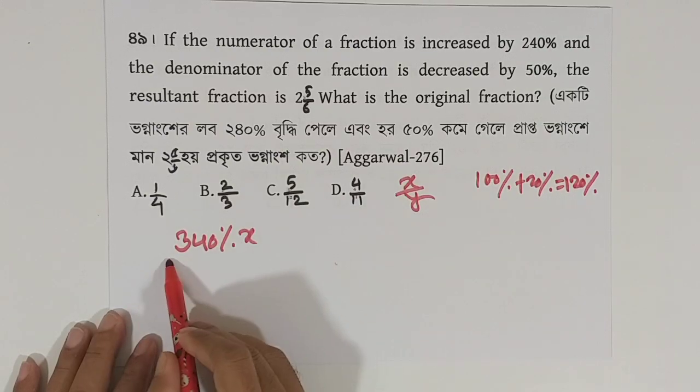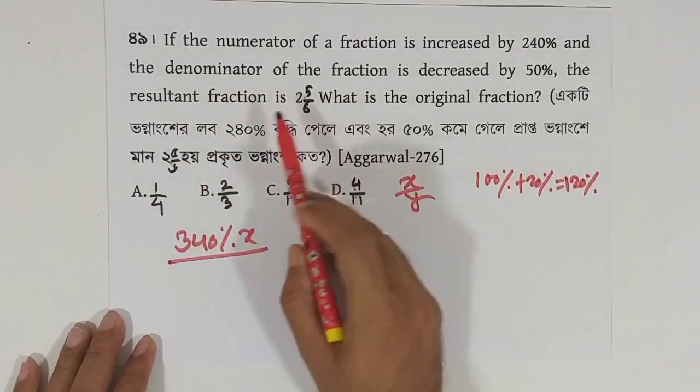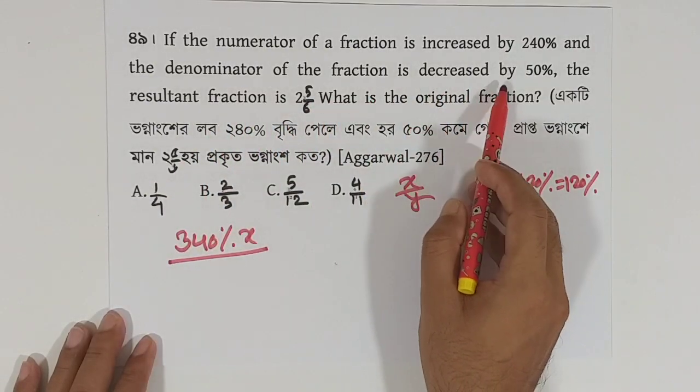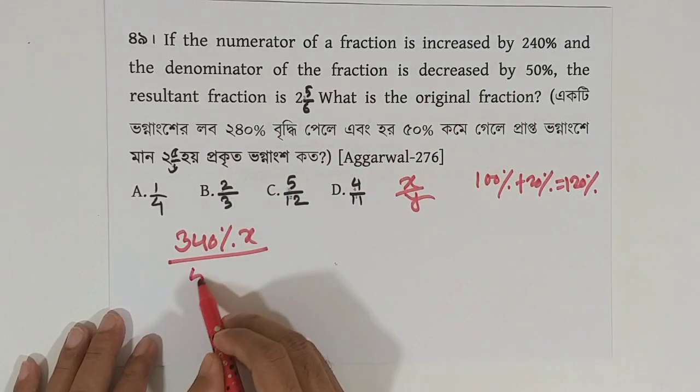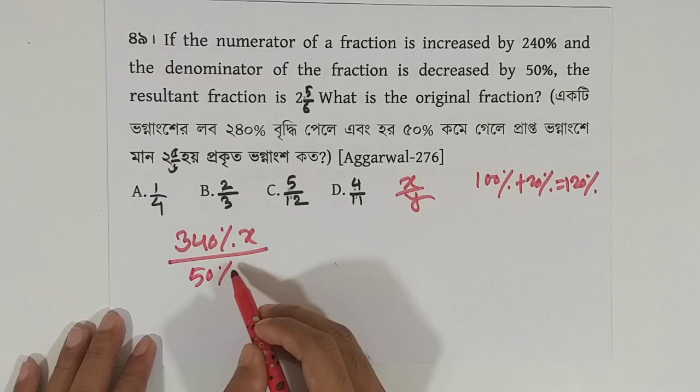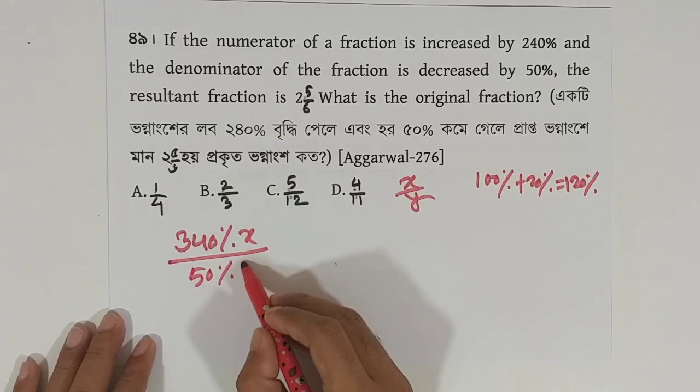The numerator is like this. So, the denominator of the fraction is decreased by 50%, 50% of y.